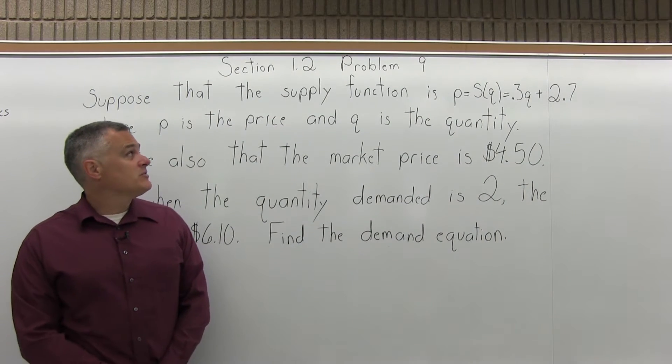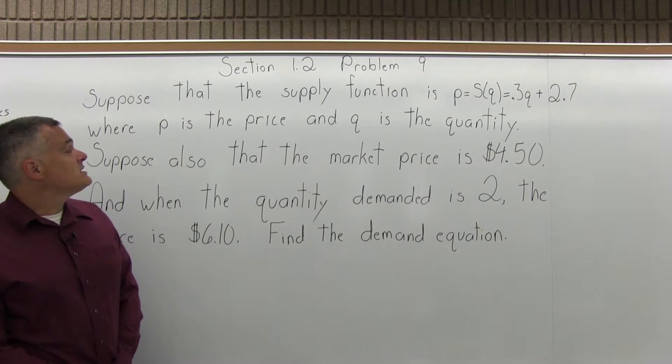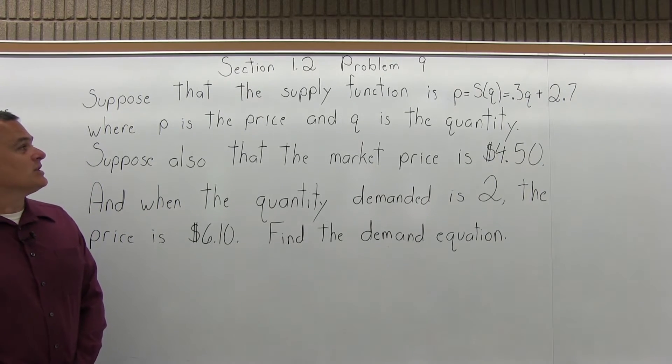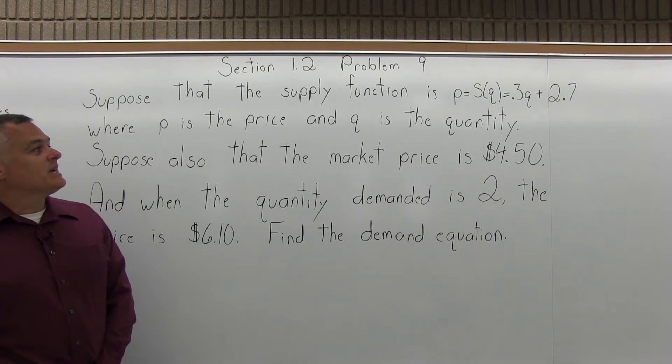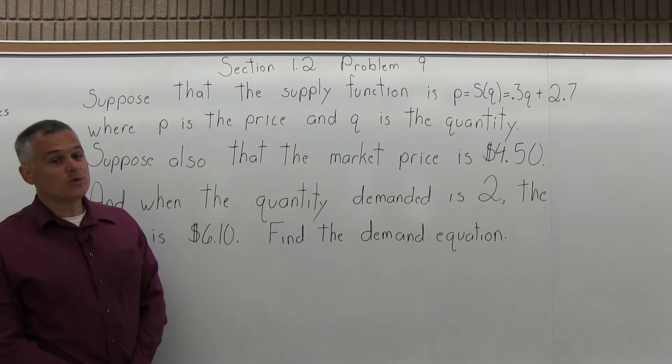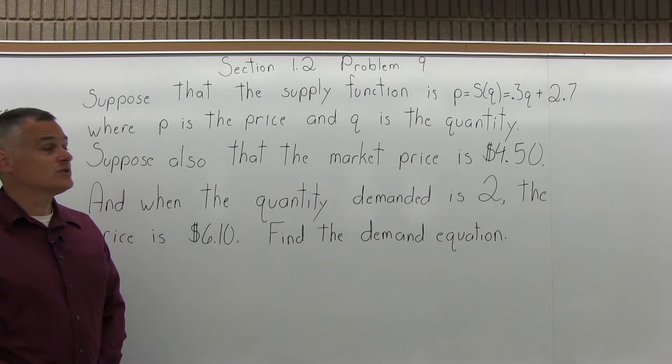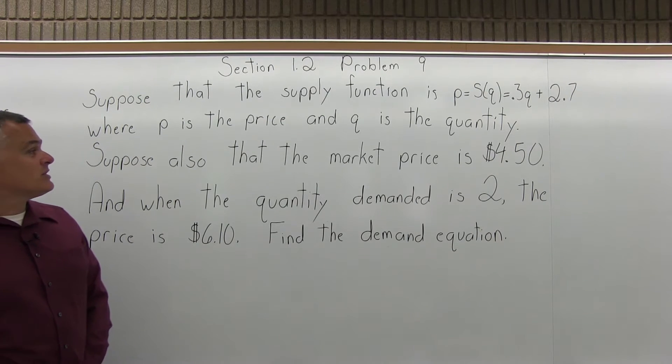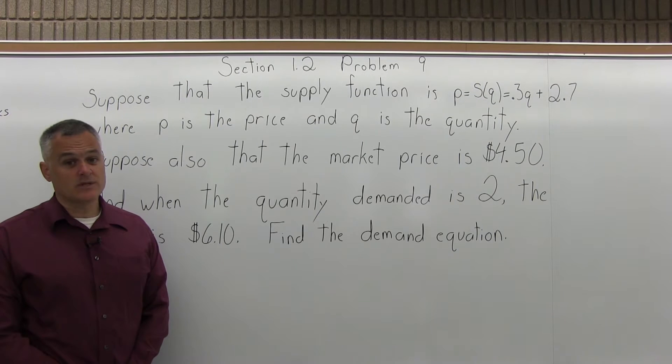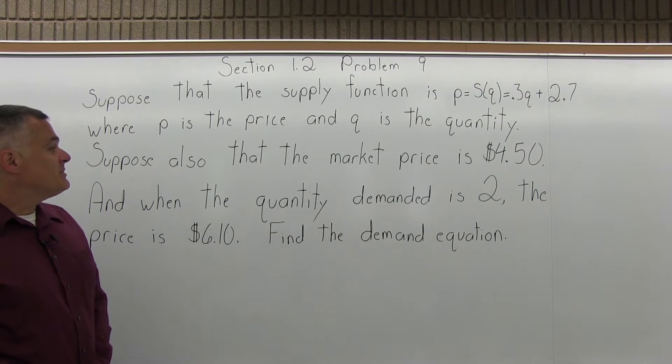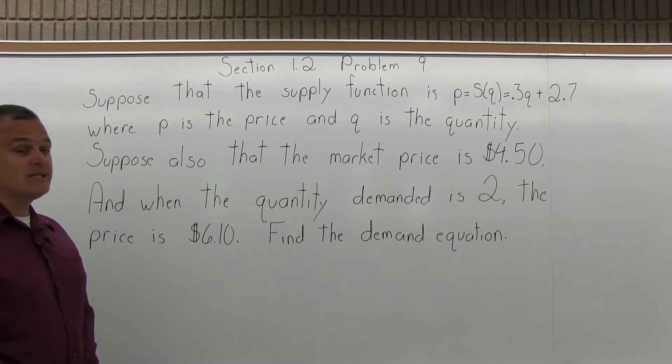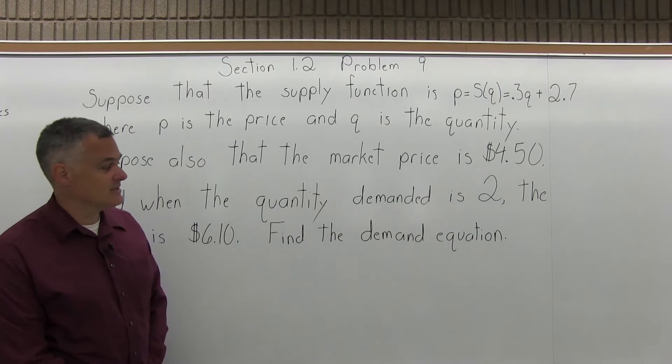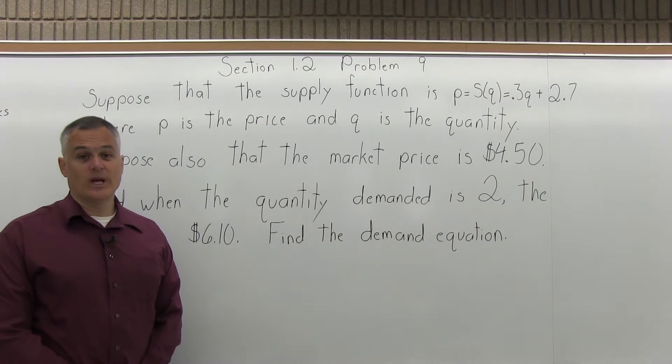This is Problem 9 from Section 1.2. It says suppose that the supply function is P equals S(Q) equals 0.3Q plus 2.7, where P is the price and Q is the quantity. Suppose also that the market price is $4.50, and when the quantity demanded is 2, the price is $6.10. Find the demand equation.